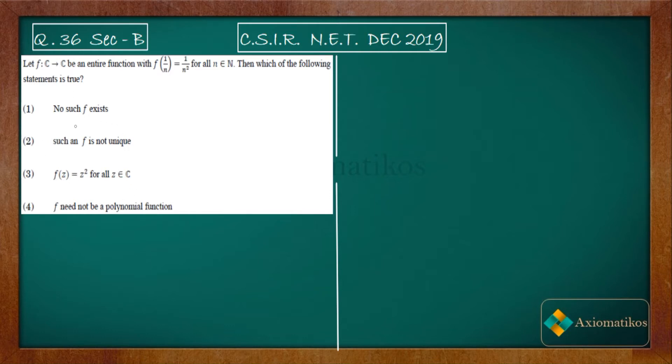Then which of the following is true? You have these options in your hand, and the question is talking about whether your function f will exist or not, whether it is unique or not, or something like this. What I want to tell you in this problem is that this problem is an application of the identity theorem that you have studied from complex analysis.